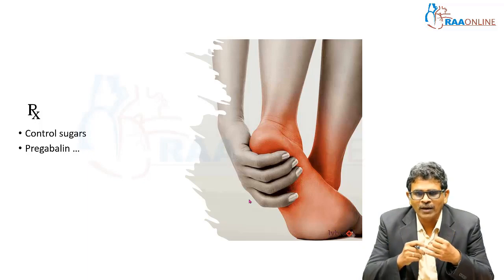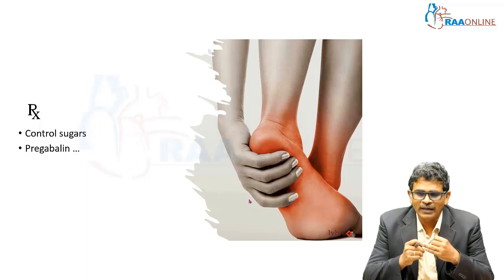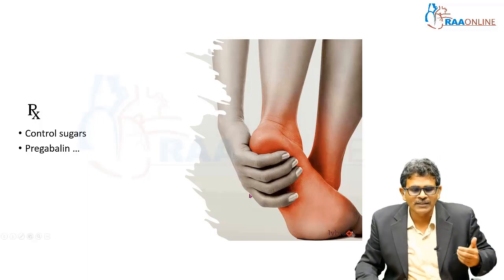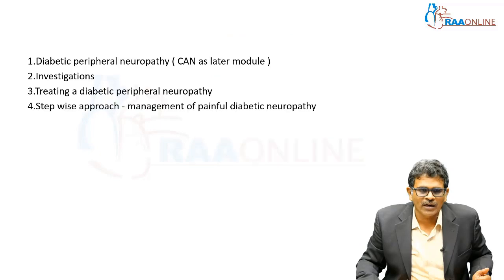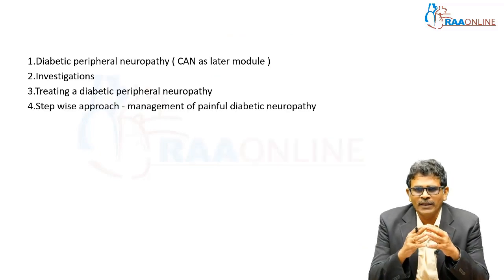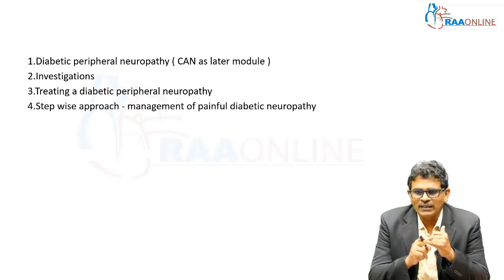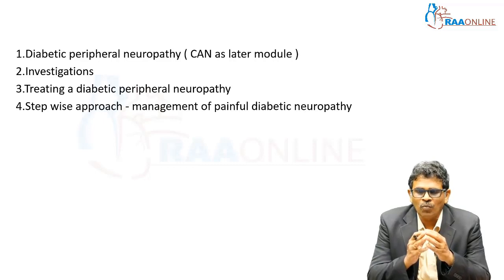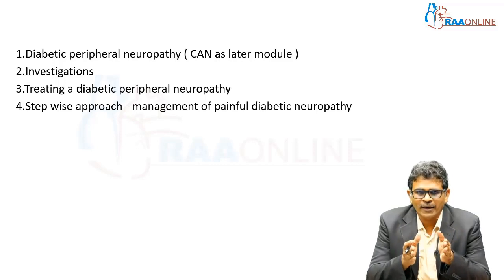Does every patient need pregabalin, or is controlling sugars the only thing we can do — and does it really help? We have more to learn in this session beyond those two common things we do in clinical practice. In this module on diabetic peripheral neuropathy, we are not going to cover cardiac autonomic neuropathy, which is covered as a separate session on screening, implications, and patient management.